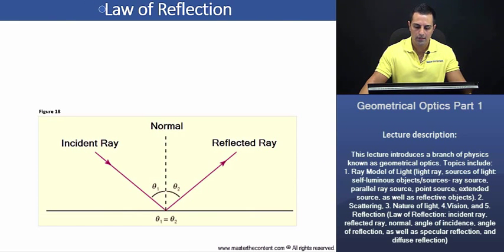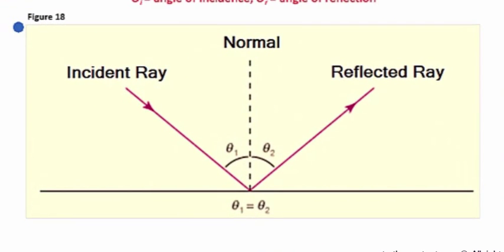Now, let's begin here by taking a look at figure 18. A ray of light heading towards an object is called an incident ray. If it reflects off the object, it's called a reflected ray.